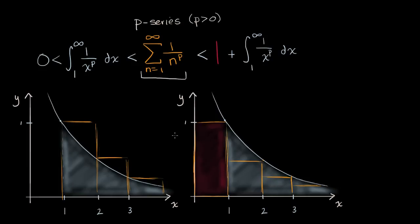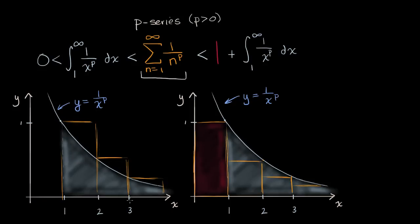I've set up some visualizations to think about when this p-series converges. Over here you have the graph — this curve right here — that's y equals one over x to the p. And because p is greater than zero, we know it's going to be a decreasing function. What we've shaded in underneath that curve, above the positive x-axis, is the improper integral from one to infinity of one over x to the p dx — that's the white area you see in both of these graphs.